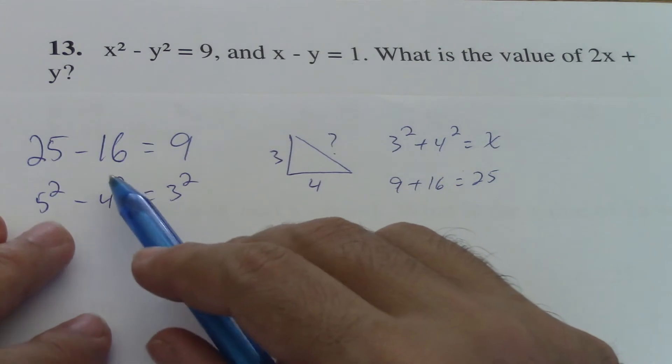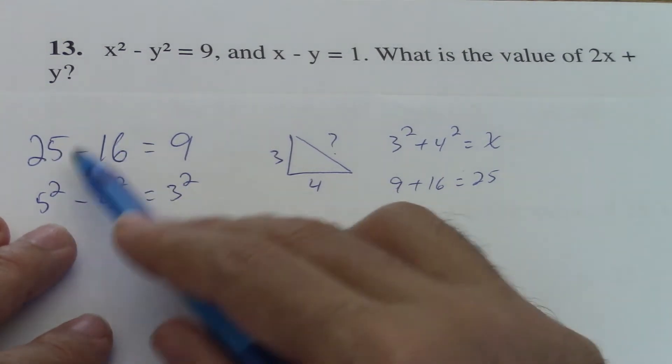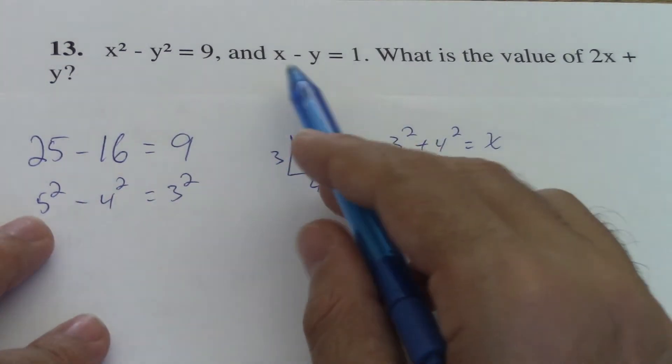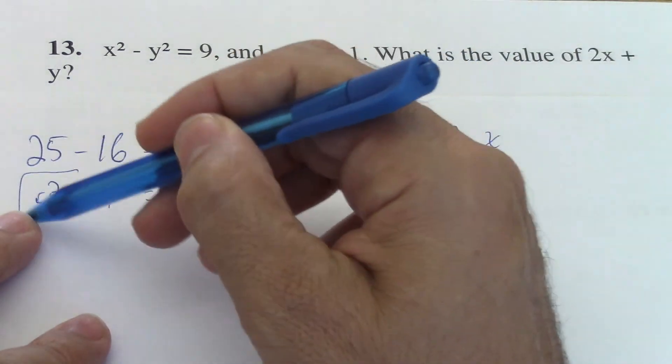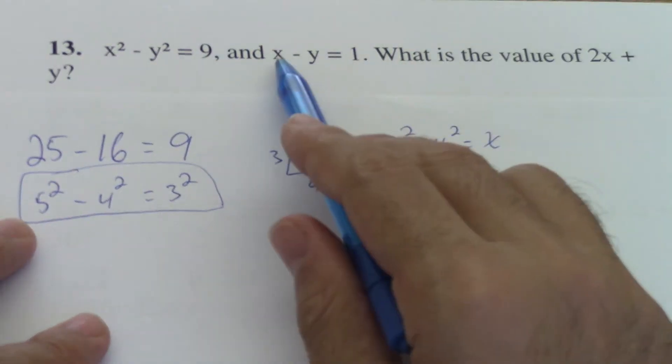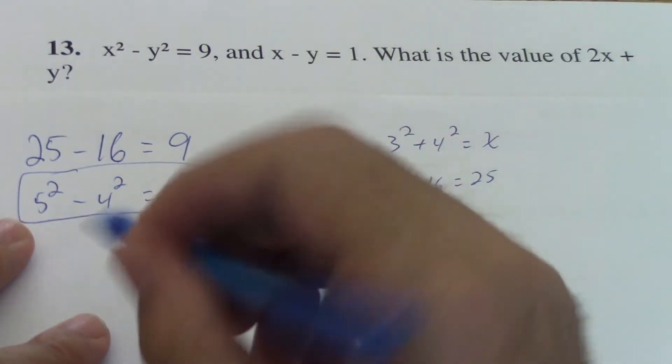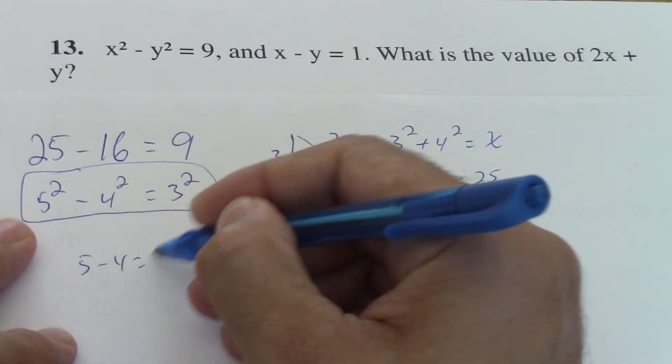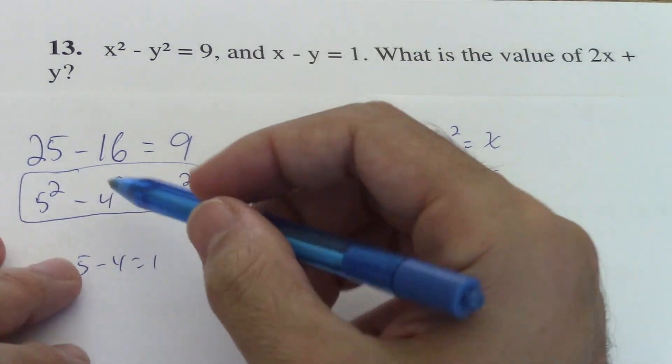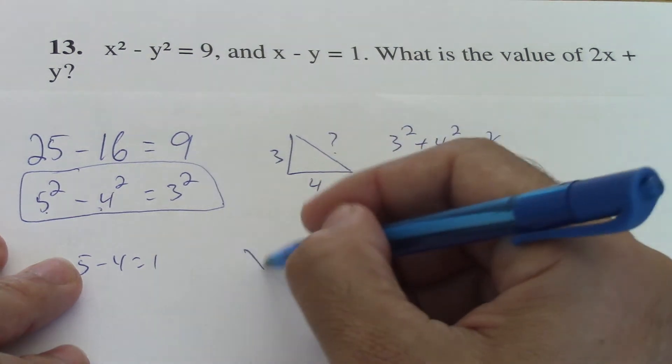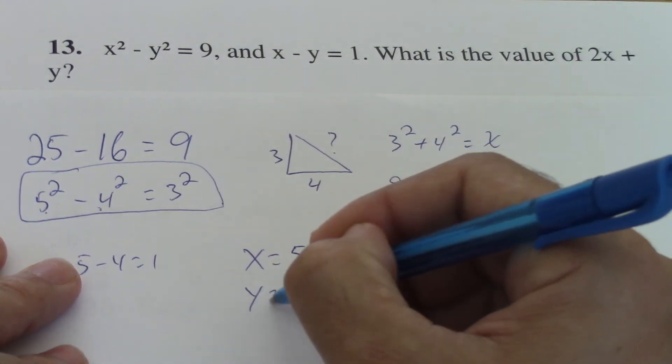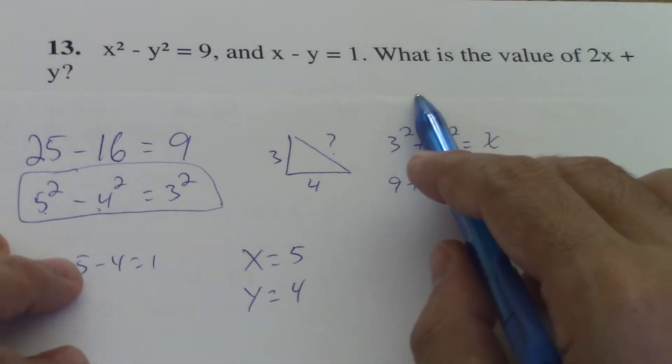So here, just take a look at this and then you notice that this fills the second condition. The second condition is that x minus y equals 1, because 5 minus 4 is equal to 1. So you're sure that those are the numbers: x is equal to 5 and y is equal to 4.